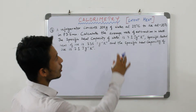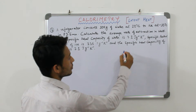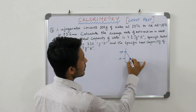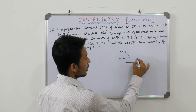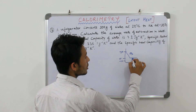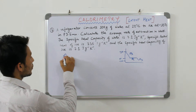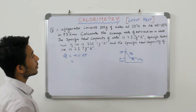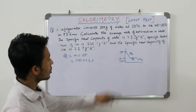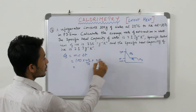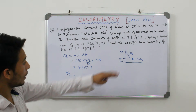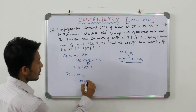There will be 3 phases. First, water at 20 degrees centigrade is converted to water at 0 degrees centigrade. Then, water at 0 degrees centigrade changes to ice at 0 degrees centigrade. Then, ice drops from 0 to minus 10 degrees centigrade. We calculate energies Q1, Q2, Q3. Q1 = MC delta T = 100 × 4.2 × 20 = 8400 joule. Q2 = ML = 100 × 336 = 33600 joule.